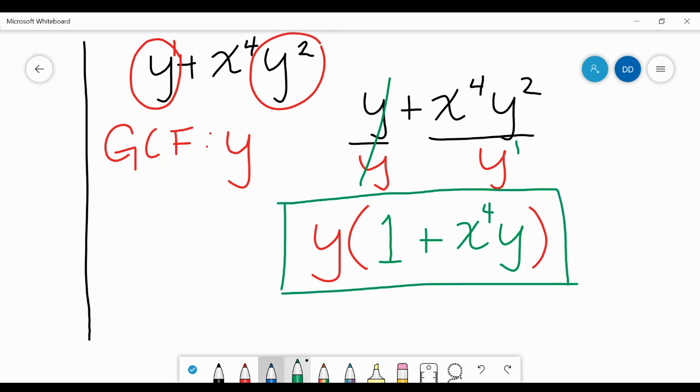Quick way to check it: distribute it, see what you get. Y times one is Y, plus bring down that X to the fourth, you can't multiply that with Y, and then Y times Y is Y squared, which is exactly what we started with. So we know that we're correct. This is probably the trickiest part: knowing when to write a one. If something cancels out, that doesn't mean it just disappears, there's a one there, so you have to put that one there. All right, if you have any questions you can always write them in the comments.